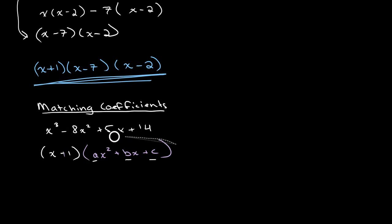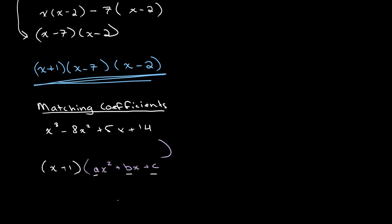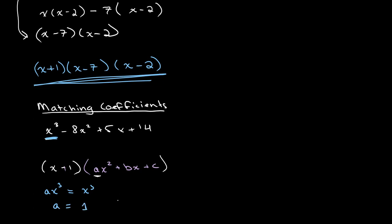To find a: multiplying ax² by x gives ax³, and this is the only x³ term. Therefore the coefficient of x³ must match our equation's x³ coefficient, which is 1. So a = 1.